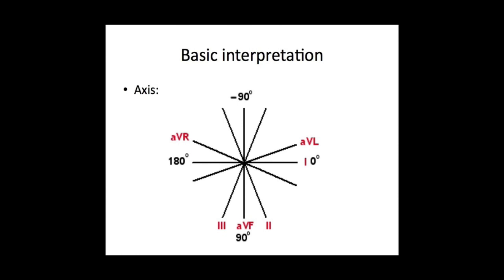What is a normal axis? Normal axis is anything in the bottom right quadrant — it can go a bit into the top right quadrant as well — from minus 15 degrees to plus 90 degrees. Anything to the left of that, so less than minus 15 degrees, is left axis deviation, and anything to the right of 90 degrees is right axis deviation.